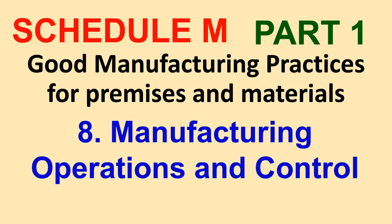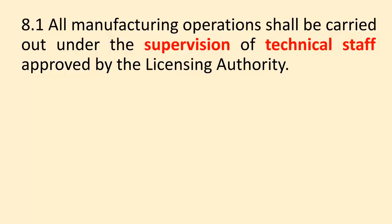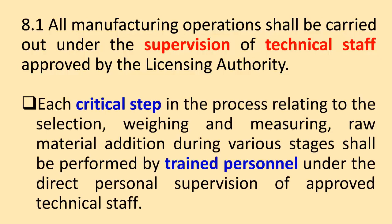Schedule M, Part 1: Good Manufacturing Practices for Premises and Materials. Section 8: Manufacturing Operations and Control. All manufacturing operations shall be carried out under the supervision of technical staff approved by the licensing authority. Each critical step in the process relating to the selection, weighing and measuring, and raw material addition during various stages shall be performed by trained personnel under the direct personal supervision of approved technical staff.